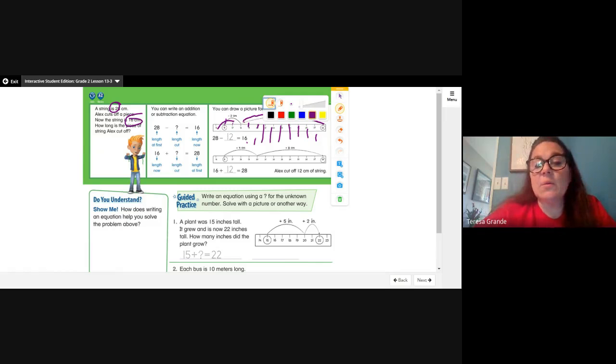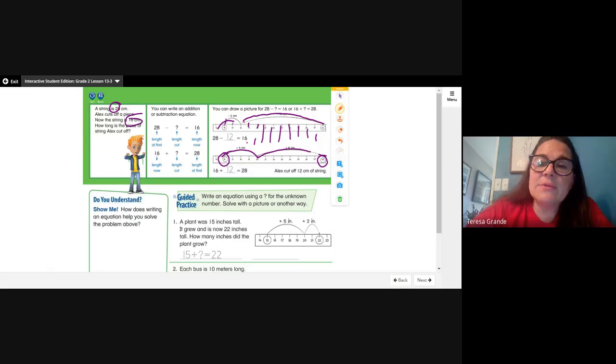If you want to check your work, you start to add. Take 16, you need to get to 28. We're saying that between 16 and 28 is 12. So we go to 20, which is 4, and then from 20 to 28 is 8 more, and that is 12. So Alex cut off 12 centimeters of string.